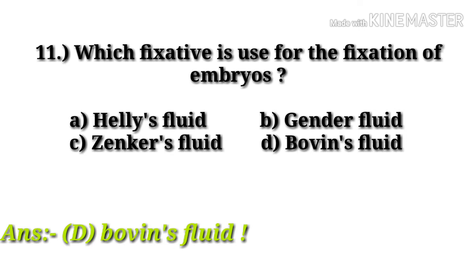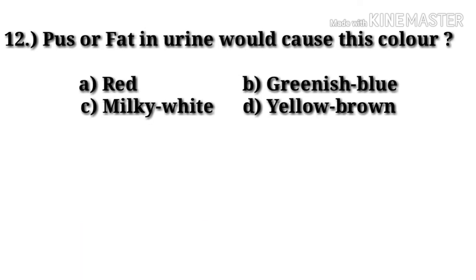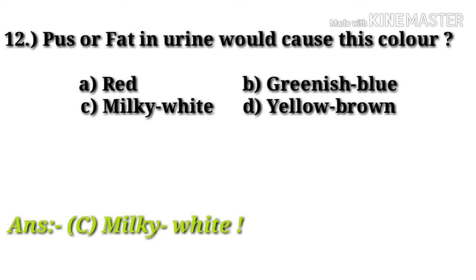Question number 12: pus or fat in urine would cause which color? Option A: red, option B: greenish blue, option C: milky white, option D: yellow brown. Option C, milky white, is the correct one.